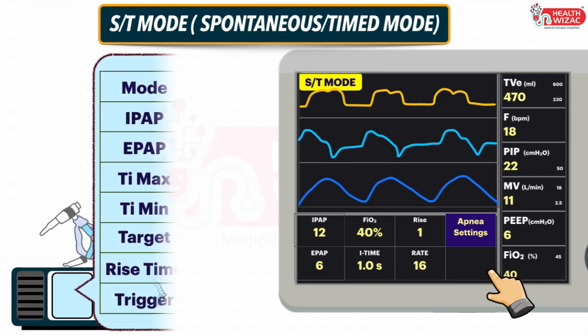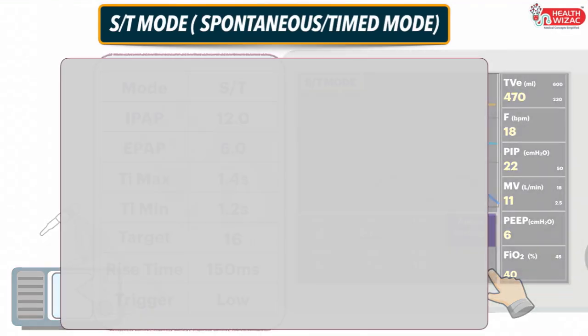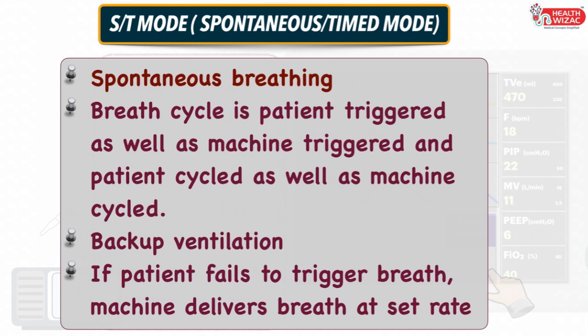If we use a small BiPAP machine to deliver ST mode, we have to set: IPAP value, EPAP value, Inspiratory Time maximum and minimum settings, Target Rate, Rise Time, and Trigger Sensitivity. This mode should be used in patients with spontaneous breathing. Key highlights: breath cycle is patient-triggered as well as machine-triggered, and patient-cycled as well as machine-cycled. ST mode has the advantage of backup ventilation so that if the patient fails to initiate a breath, the machine triggers a breath to meet the set respiratory rate.